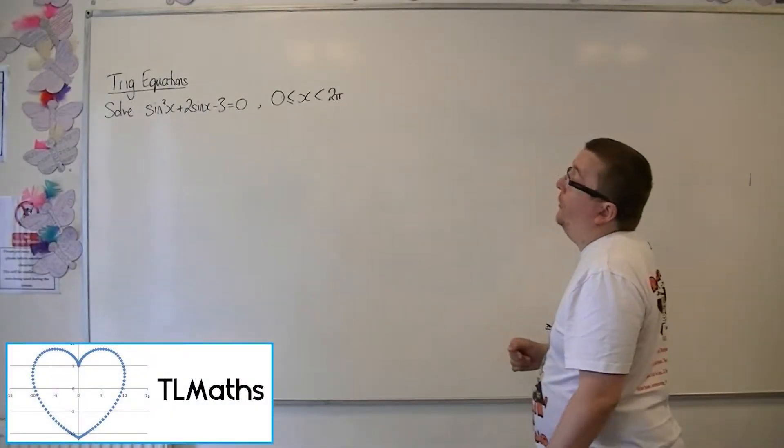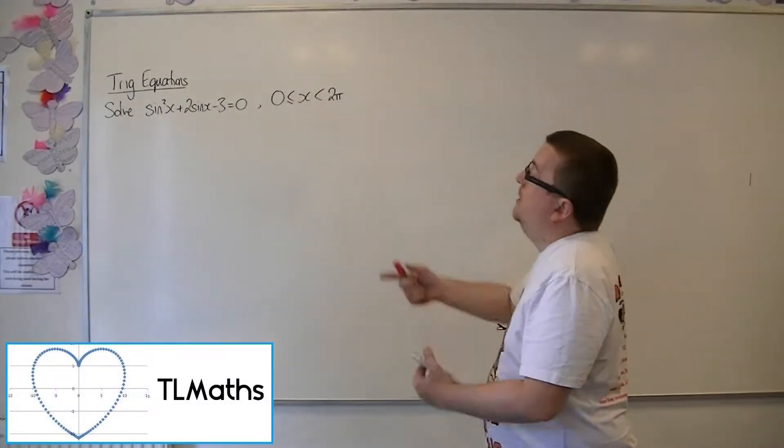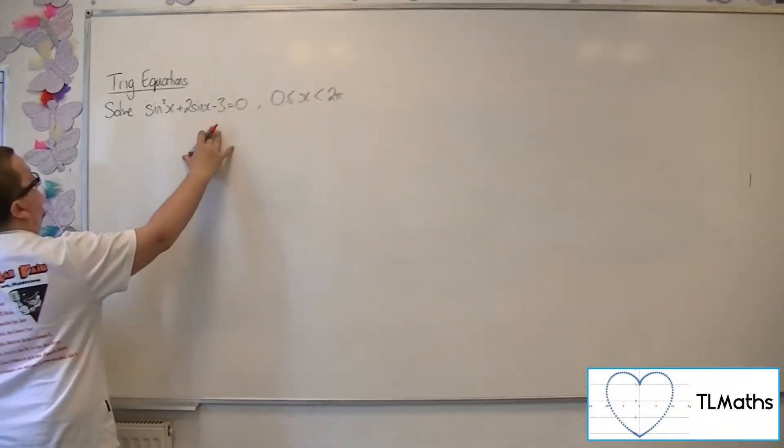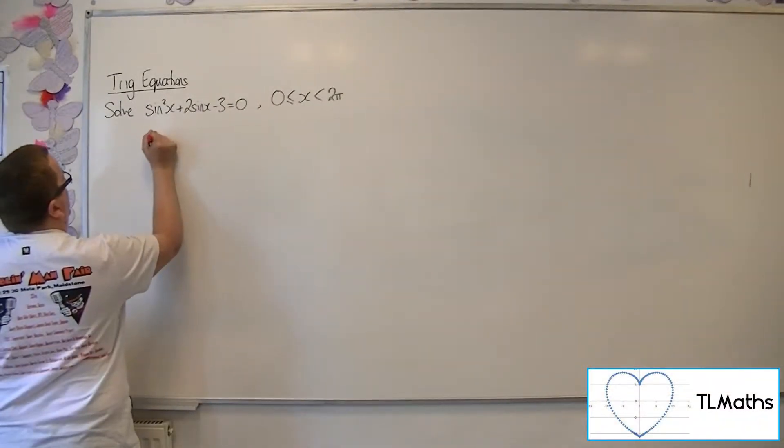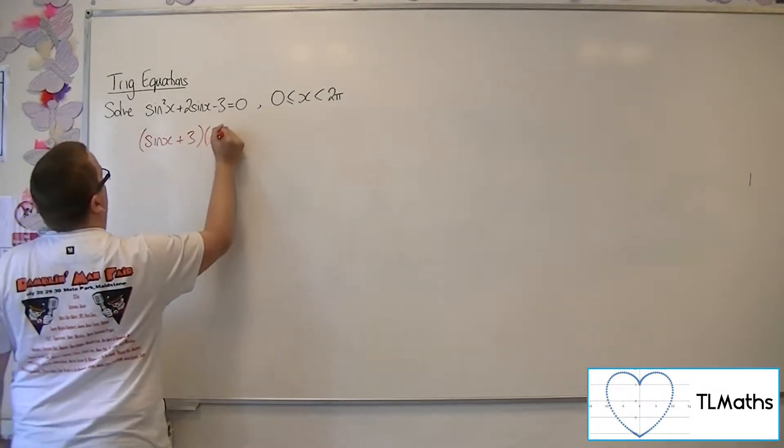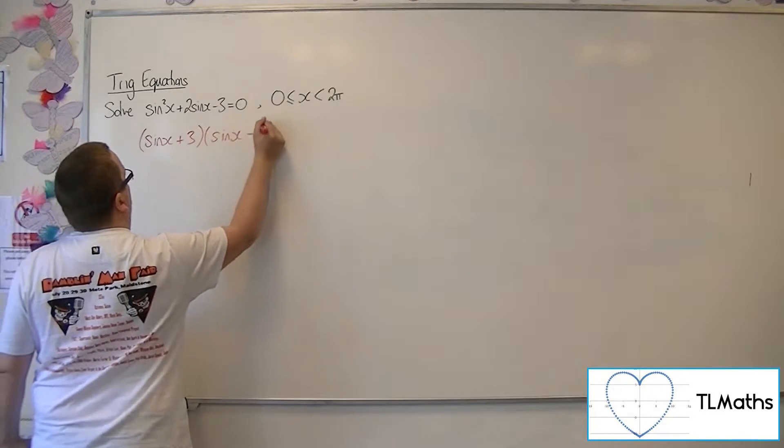Okay, so we need to solve sin²x + 2sinx - 3 = 0 between 0 and 2π radians. This is a quadratic in sine that can be factorised, so this would be (sinx + 3)(sinx - 1) = 0.